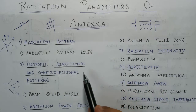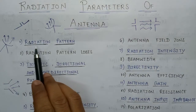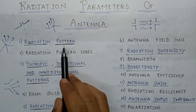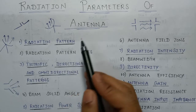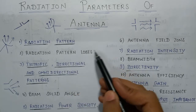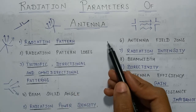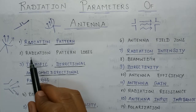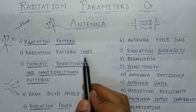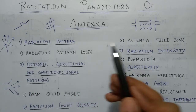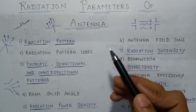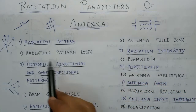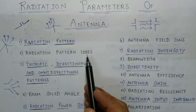The first lecture is based on radiation pattern, in which we will study different radiation patterns. In the second lecture we will study about radiation pattern lobes. There are four types of lobes: major lobe, minor lobe, side lobes, and back lobes.